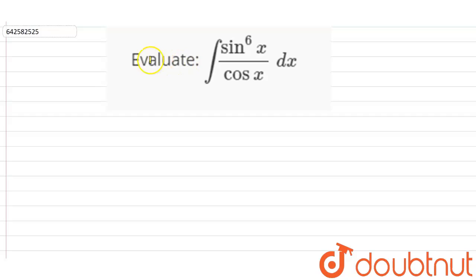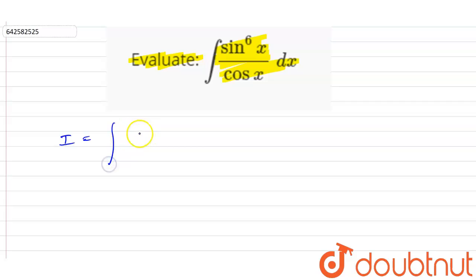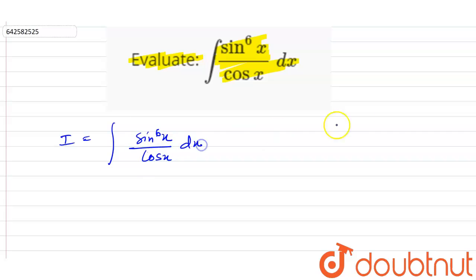The question is: evaluate the integral of sin⁶x divided by cos x dx. Now let the given integration be equal to I. So I equals the integration of sin⁶x divided by cos x dx.